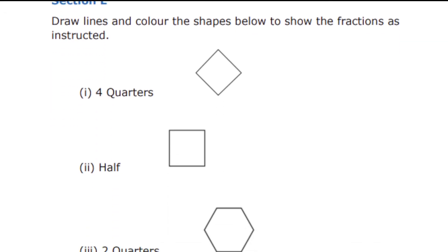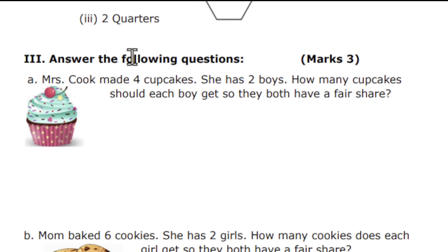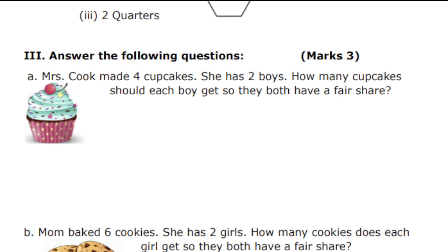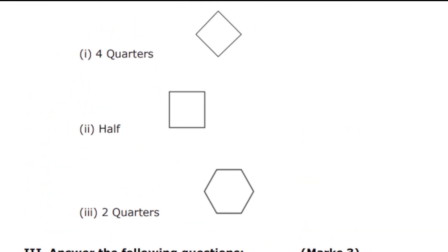Now we will go to answer the following questions. Mr. Cook made four cupcakes and she has two boys — how many cupcakes should each boy get so they both have a fair share? Next: mom baked six cookies and she has two girls — how many cookies does each girl get so they both have a fair share? Both are similar questions with just the numbers changed — find and write what the fair share is.